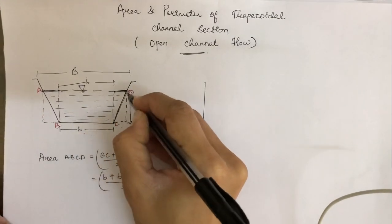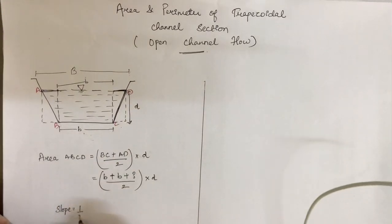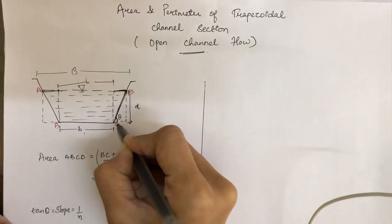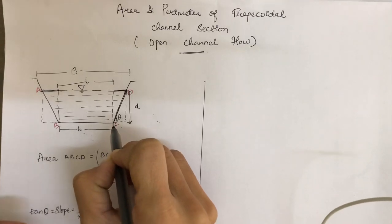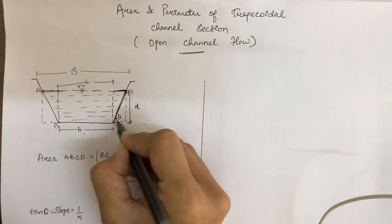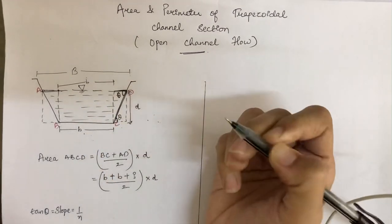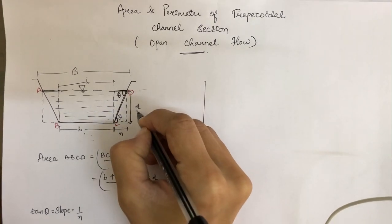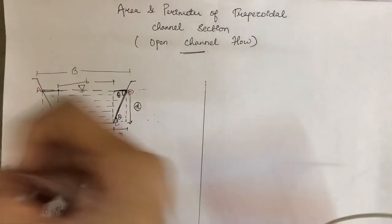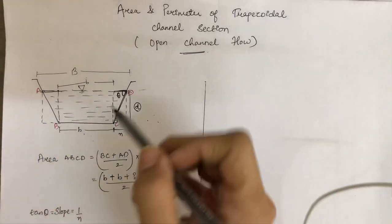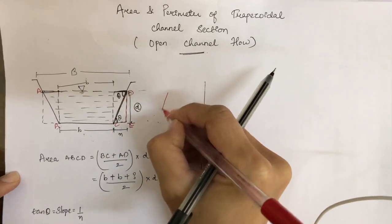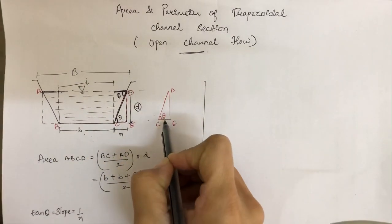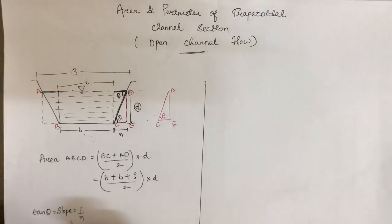The slope is represented as 1/n, and that equals tan θ, where θ is the angle the channel side slope makes with the horizontal. In the triangle, the horizontal distance is n and the vertical is 1. Here, let me label point E, and in triangle CDE, if we apply the formula for tan θ, which represents the slope.